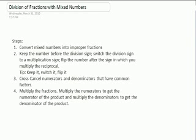Third, cross-cancel numerators and denominators that have common factors. Fourth, multiply the fractions. Multiply the numerators to get the numerator of the product and multiply the denominators to get the denominator of the product.